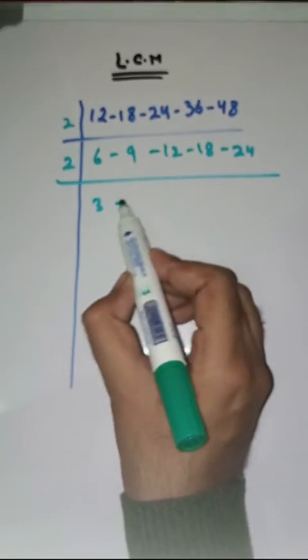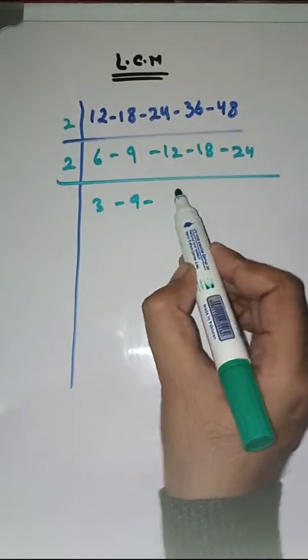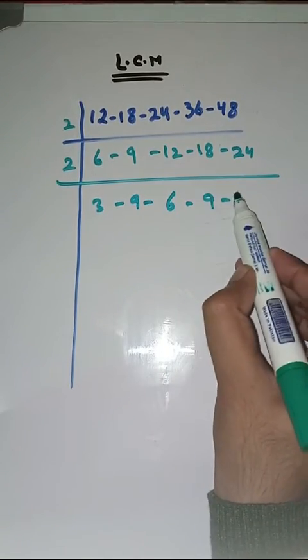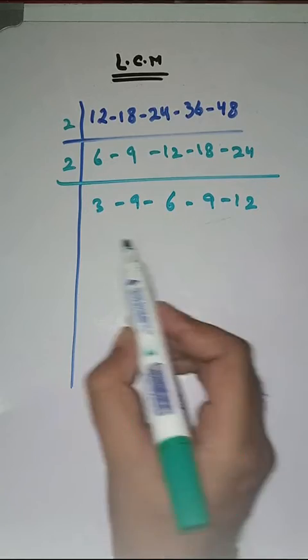Again with 2. 2 3s are 6, 9 as it is, 2 6s are 12, 2 9s are 18, 2 12s are 24.